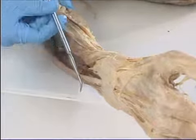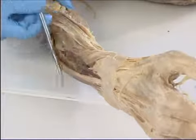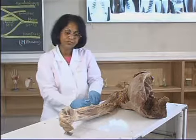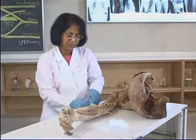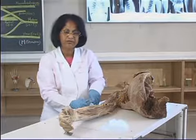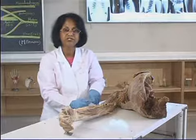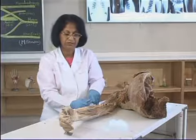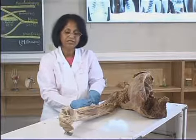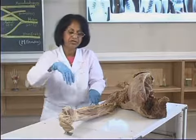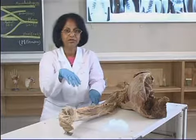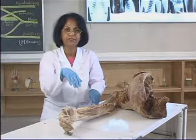The nerve also supplies the skin over the posterior aspect of the forearm. Injury to this nerve causes a condition called wrist drop, because the extensors of the wrist are paralyzed, causing the hand to fall into a very flexed position.